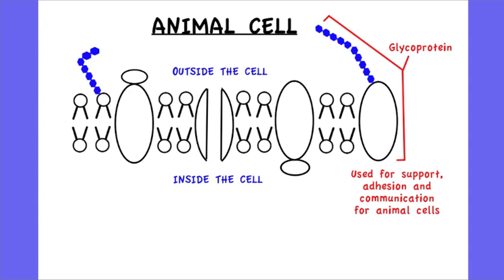So your two main examples are the cellulose cell wall in plant cells and glycoproteins in animal cells. And for each, you should be able to outline their roles.